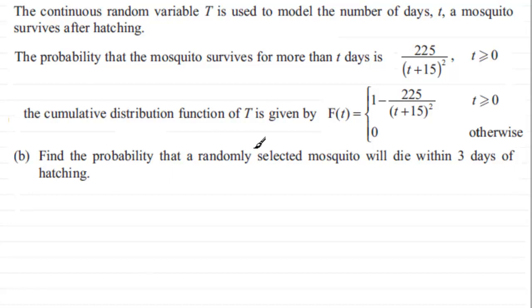Okay, welcome back. If we're asked to find the probability that the selected mosquito will die within three days of hatching, that would be the probability that it will survive up to three days. So that's the probability that T, our random variable T, is less than or equal to three, and this is represented by the cumulative distribution function F of three.